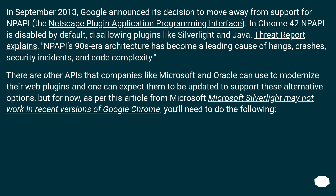In September 2013, Google announced its decision to move away from support for NPAPI — the Netscape Plugin Application Programming Interface. In Chrome 42, NPAPI is disabled by default, disallowing plugins like Silverlight and Java.